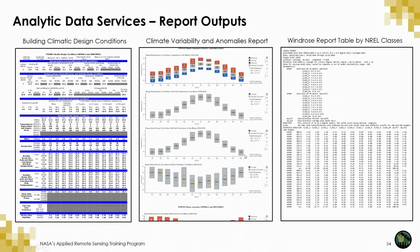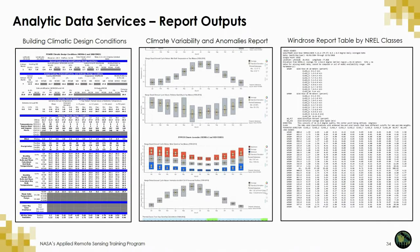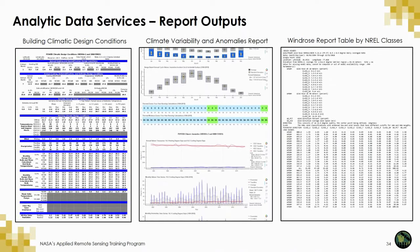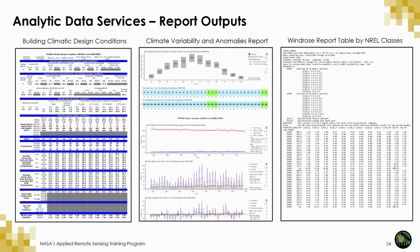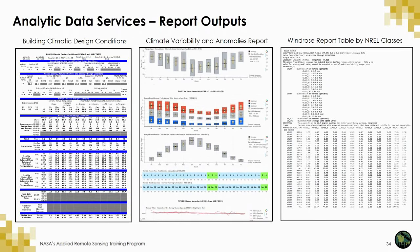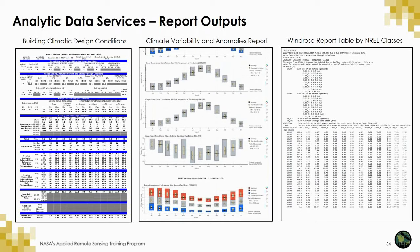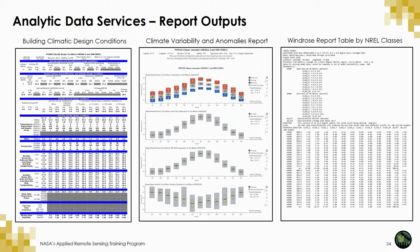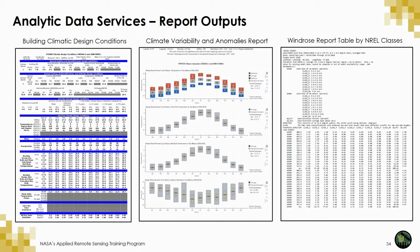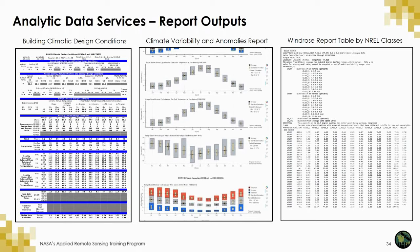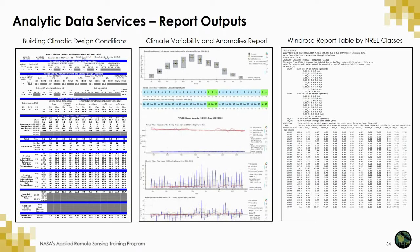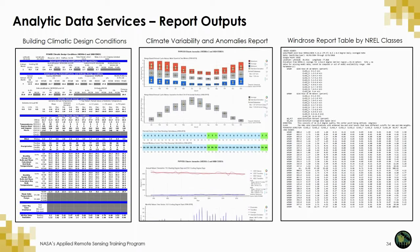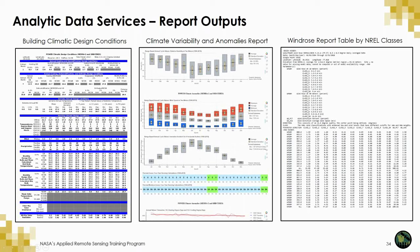Here's an example of the reports. On the left is the Building Climate Design Conditions Report developed with ASHRAE. In the middle is a subset of the Climate Vulnerability and Anomalies Report. On the right is a wind resource report using NRL classes. We're working on developing graphics to accompany it, but currently it's a text-based report providing that first-cut analysis for site validation.